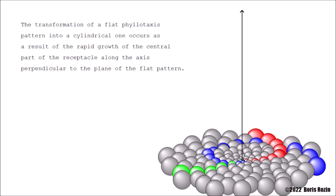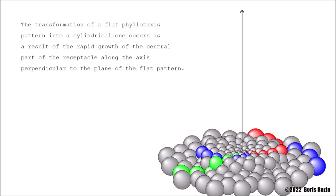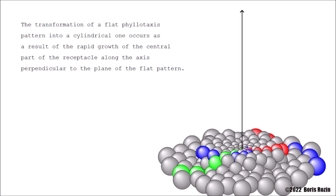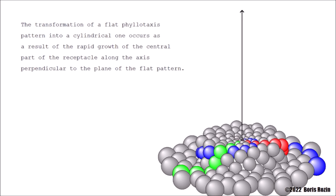The transformation of a flat phyllotaxis pattern into a cylindrical one occurs as a result of the rapid growth of the central part of the receptacle along the axis perpendicular to the plane of the flat pattern.